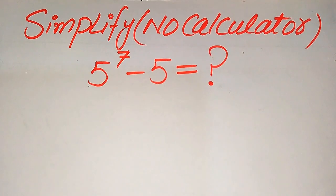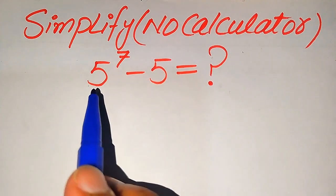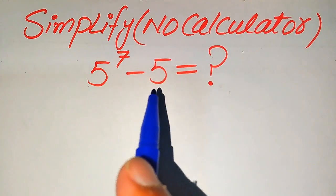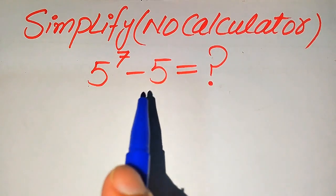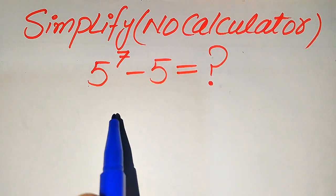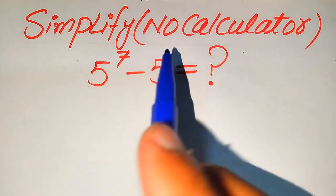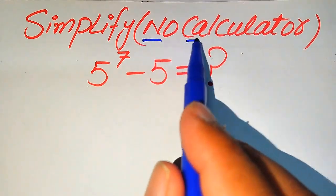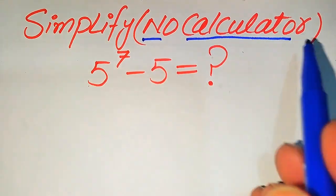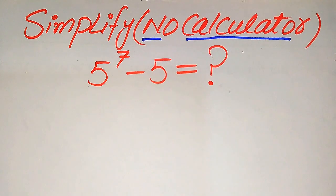Hello everyone. How to simplify this nice algebraic expression: 5 to the power of 7 minus 5. We write this algebraic expression in its lowest form. Remember, a calculator is not allowed in this problem, which means we need to show all of the working on paper.